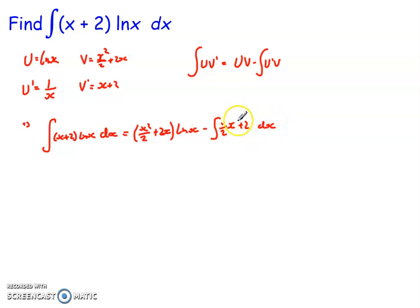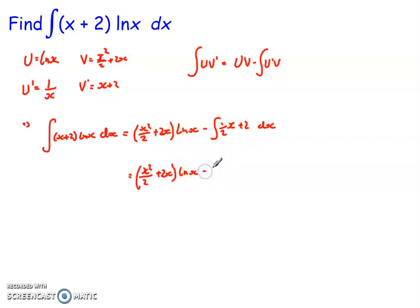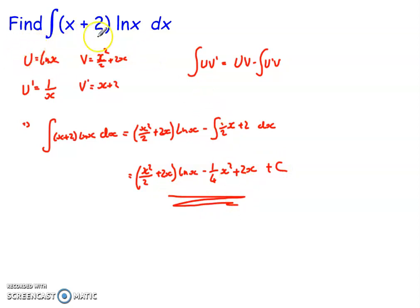Now I just need to integrate that remaining part. So I've got (x²/2 + 2x)·ln(x), and integrating (½x + 2) gives minus (¼x² + 2x), plus the constant of integration C. So there we go — we've integrated it. Sometimes there's an obvious choice for u because we can place restrictions on part of the function, such as the fact that ln(x) cannot be integrated directly.